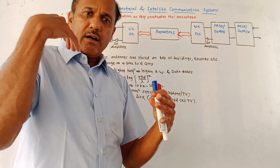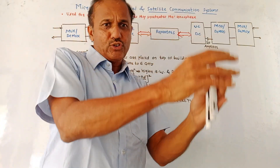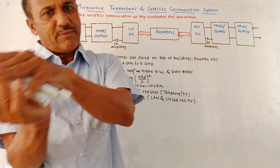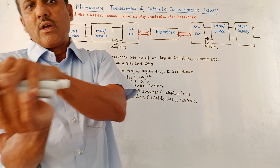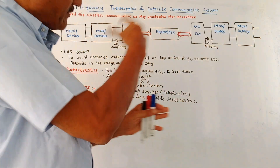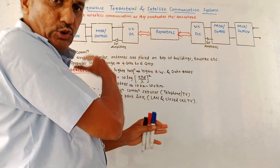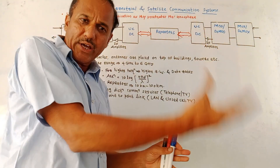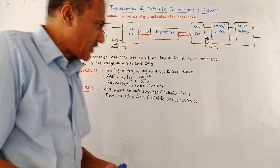At the receiver end, micro signals are again converted into a baseband signal. This is a two-way, two-directional communication.